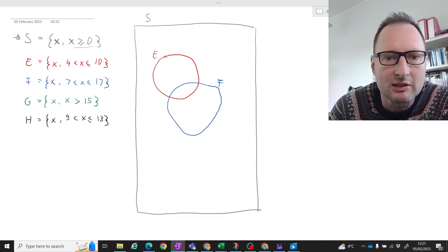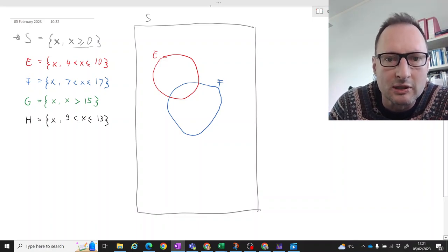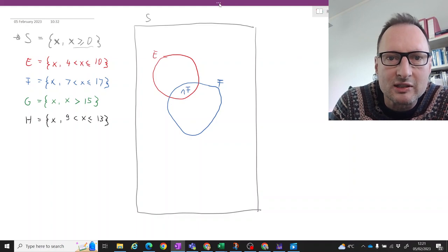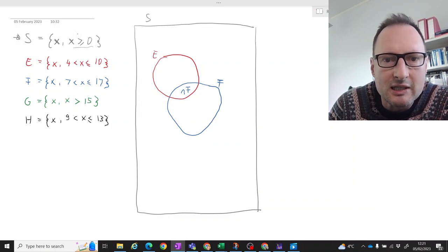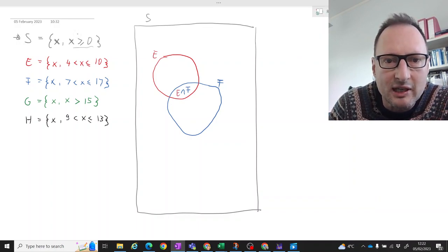Okay, so the intersection between E and F. So let's write that here. I'll write it in blue, but it doesn't matter. The intersection is this, and it's the intersection between E and F. Okay, that is this area here.